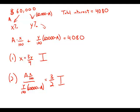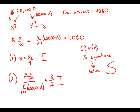Because both statements are individually insufficient, we consider combining them. With the original starting equation, the equation from statement one, and the equation from statement two, we now have three equations total — three equations and three unknowns — so we can solve for all variables. Combined, the statements provide sufficient information.